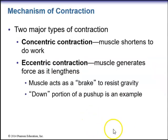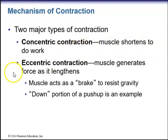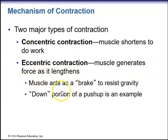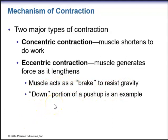There are two major types of contraction. Concentric contraction is when the muscle shortens to do work. Eccentric contraction is when the muscle generates force as it lengthens — the muscle acts as a brake to help resist gravity. An example of eccentric contraction is the downward portion of a pushup.